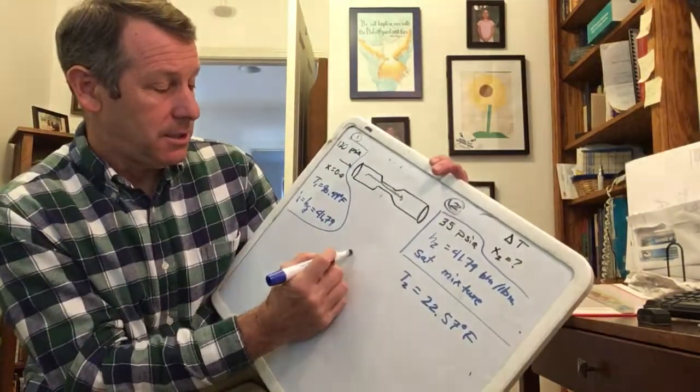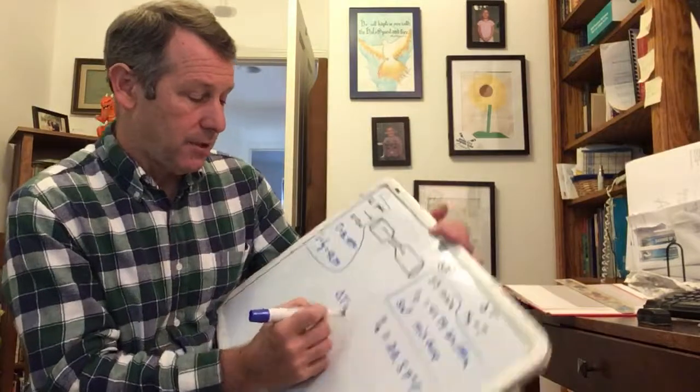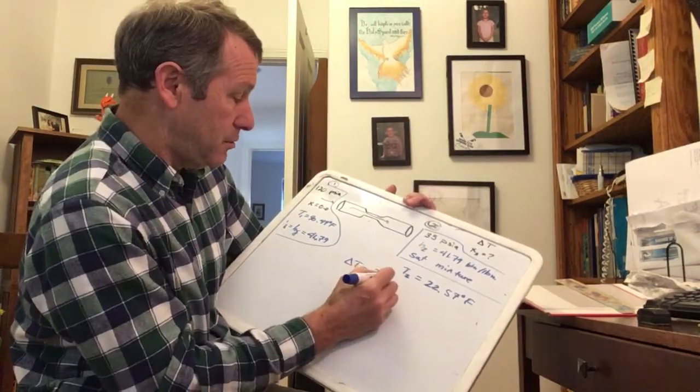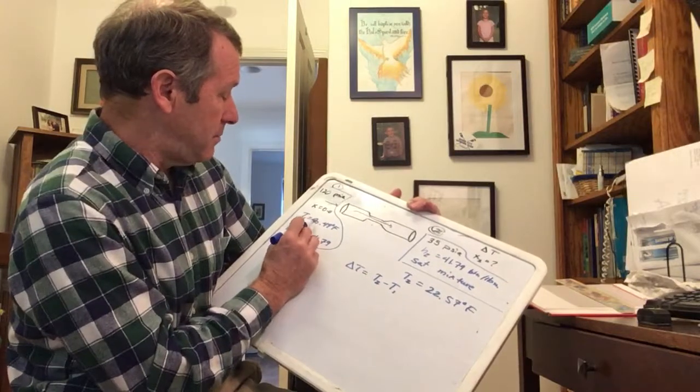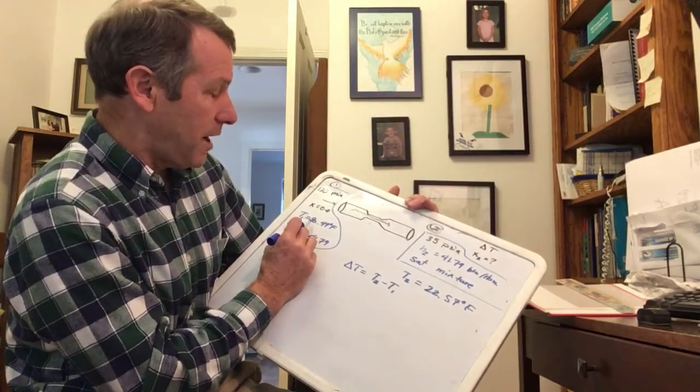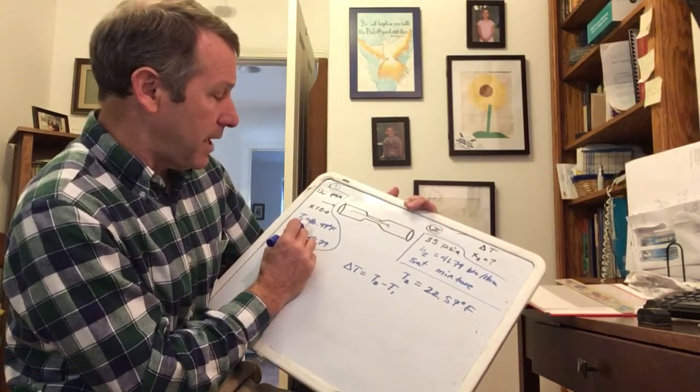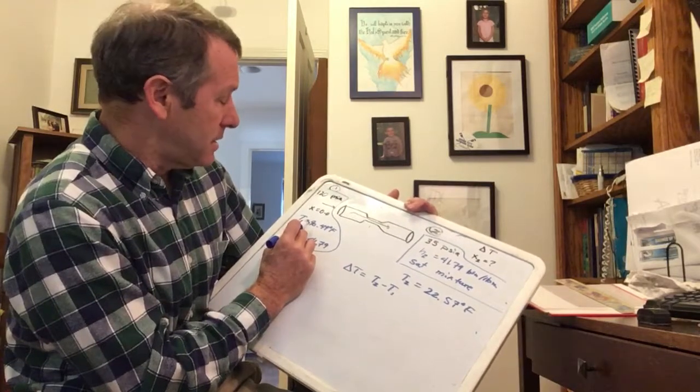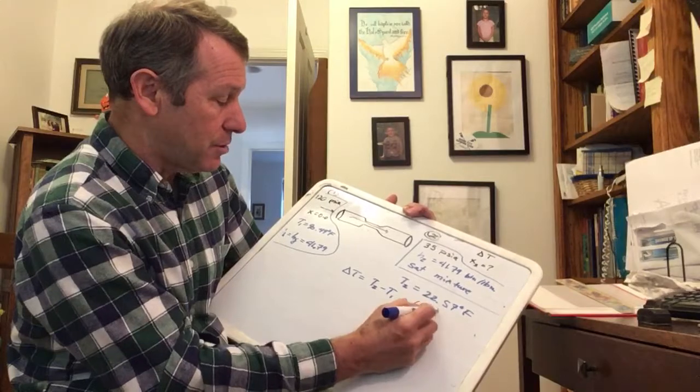Let's finish it off. We want to get our delta T which would be T2 minus T1. You can crank through that yourself. T2 minus T1: 22.6 minus 90.5, if we just round it off a little bit, that's about a 68 degree temperature drop.